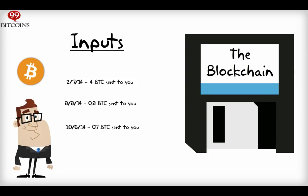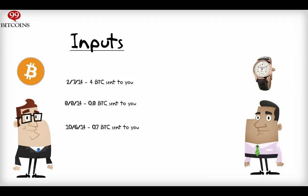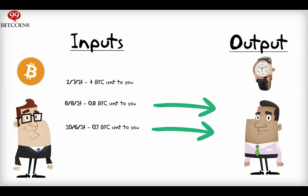Let's say you entered a store to buy a watch for one bitcoin. Instead of taking out actual cash from your pocket and paying for something, you just tell the seller: here are the references that I have this money, or here are my inputs. What you mean is, here are previous transactions sent to me that add up to one bitcoin or more. This is called an output. So each output is compiled out of one or more previous inputs.